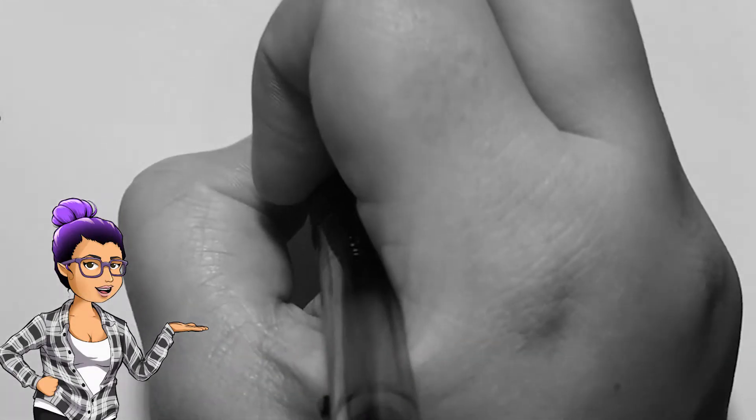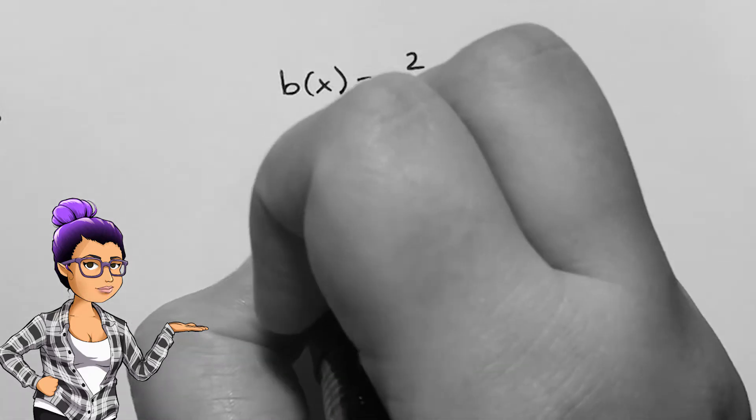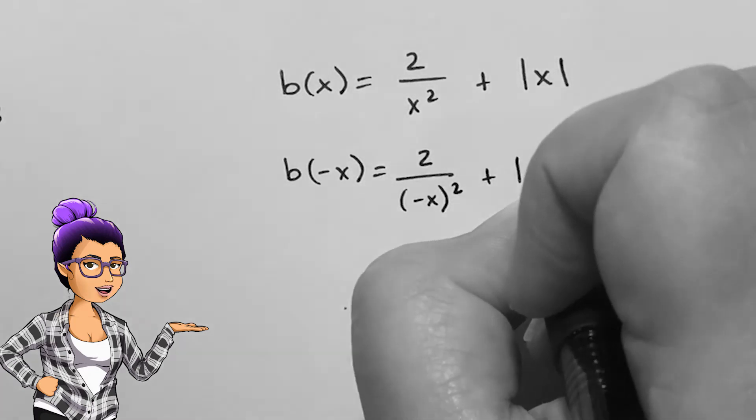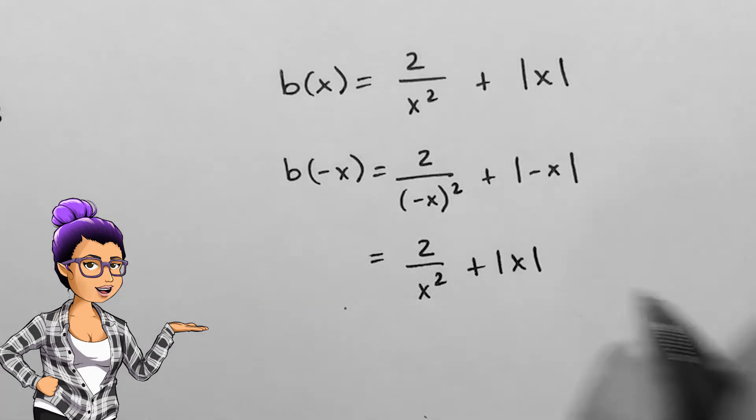Given b of x equals 2 over x squared plus absolute value of x, I plug in negative x and simplify it down. I get the exact same thing out. This means that b of x is even.